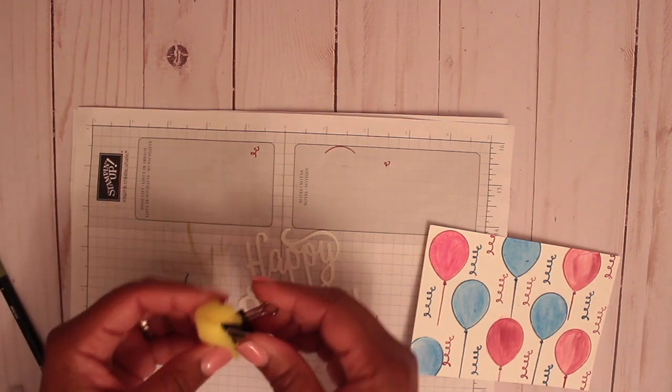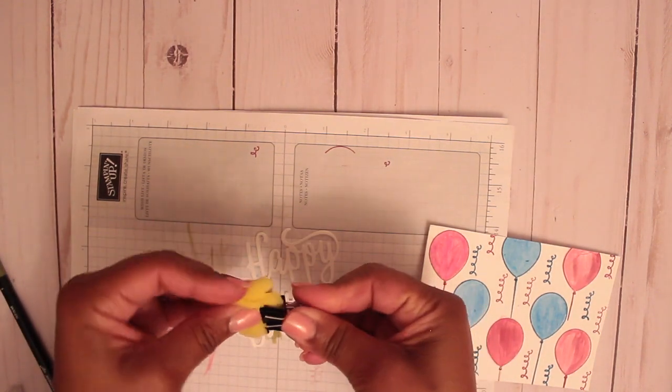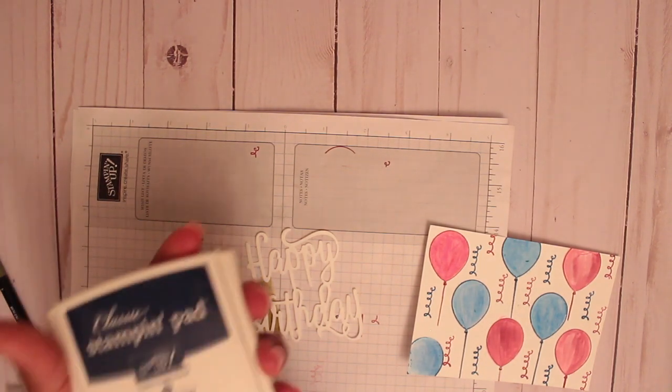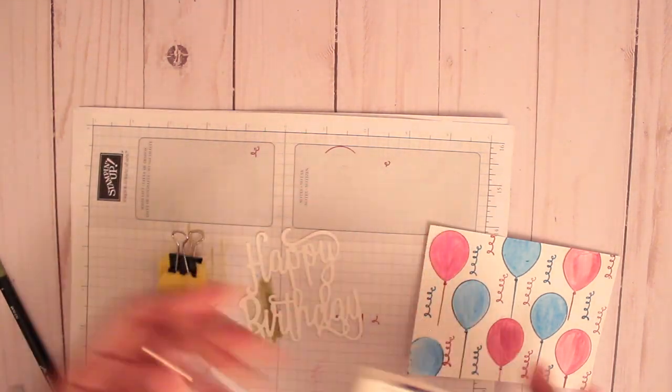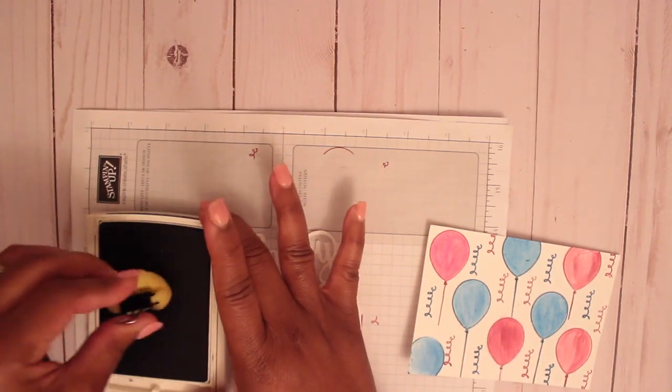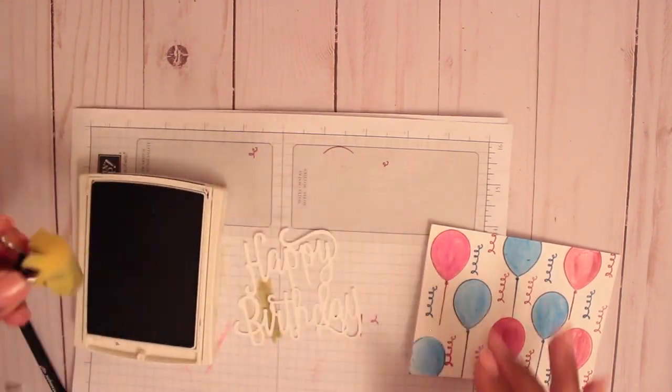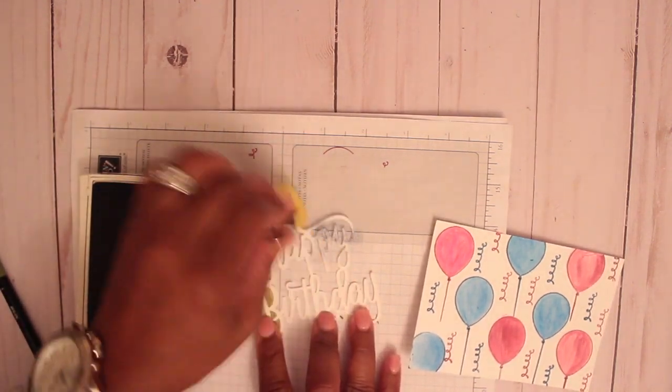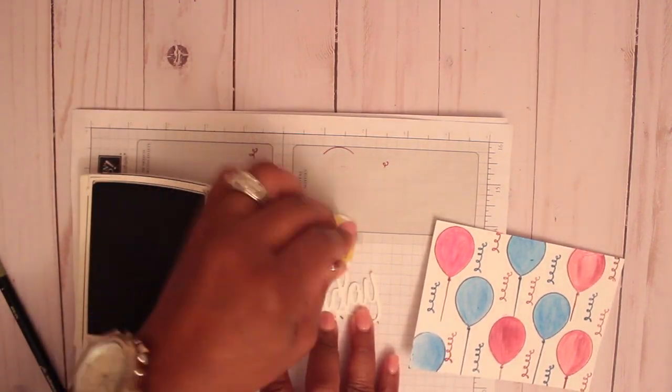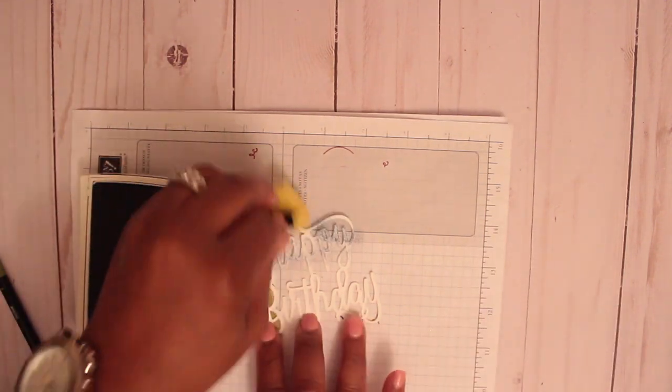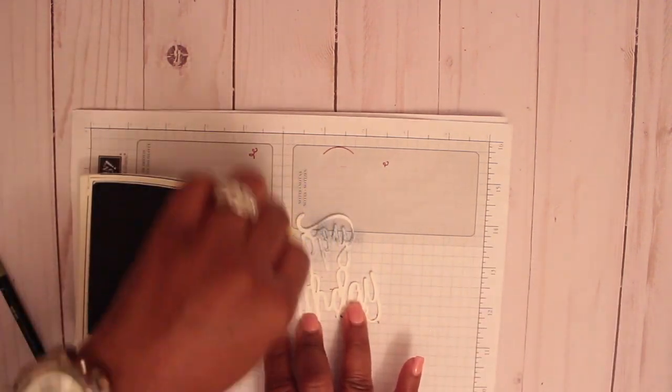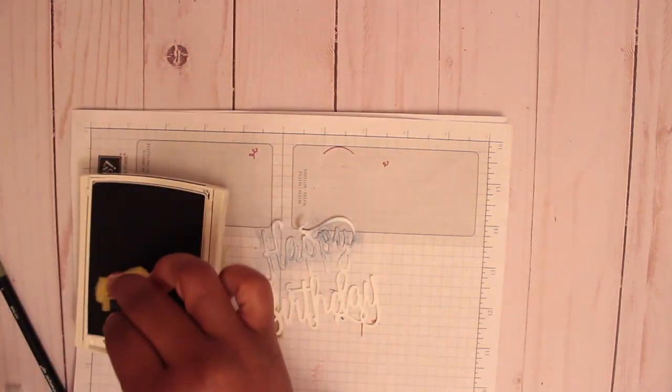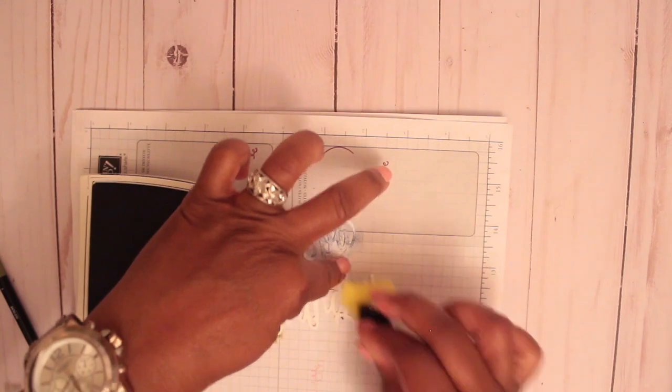I just broke off a piece of sponge and put it on the clip and get my Night of Navy ink pad and dip that in there. I'm just going to sponge it on here. I'm going to have to be careful because this is fragile and I don't want to tear it.